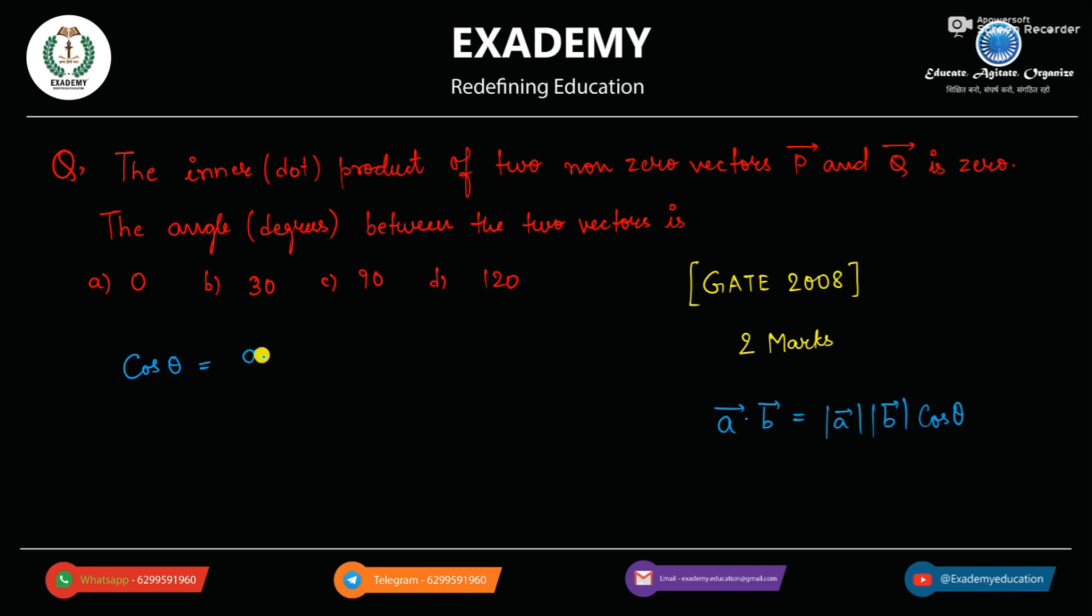So, we know that a-vector dot b-vector is mod of a-vector and mod of b-vector. The inner product of two vectors, p and q, is zero. This dot product is zero.